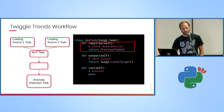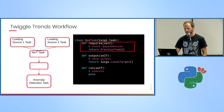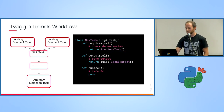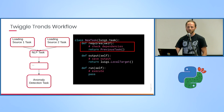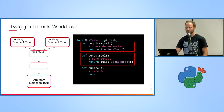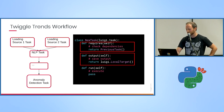We create a Luigi task similar to this one. We extend Luigi task and then we need to implement three methods: requires, output, and run. In requires, we define the previous task it is dependent on. In output, we specify where to save the data — to some local storage or maybe cloud. And run executes the actual code of the task.